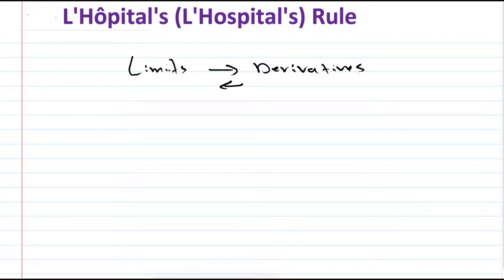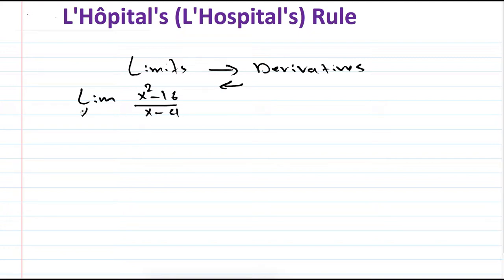But if you remember, we solved problems regarding limits and we were okay — we didn't need any derivatives. So why would we use derivatives? Well, suppose we have a limit like this: the limit of (x² minus 16) over (x minus 4) as x approaches 4. A way to solve this is by direct evaluation, so we directly evaluate 4 into the function. It will be 16 minus 16 over 4 minus 4, which gives 0 over 0, and we know that is not acceptable.